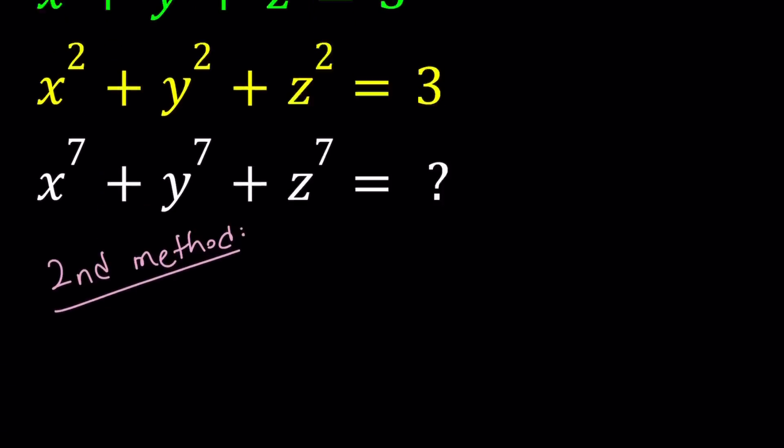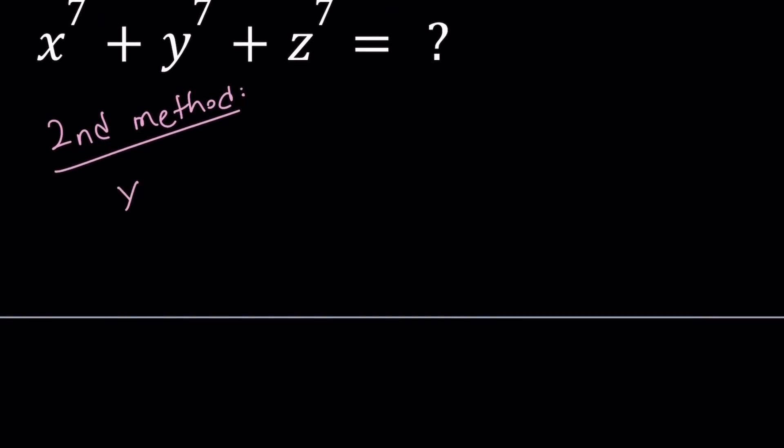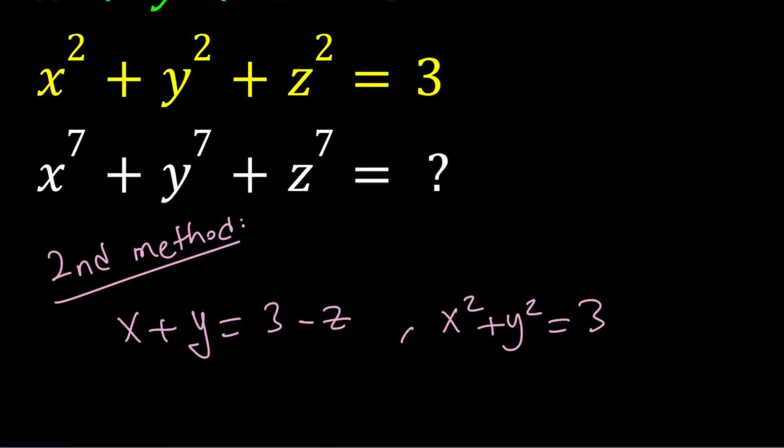I'm going to isolate x plus y from the first equation. So x plus y can be written as 3 minus z. And from the second equation, x squared plus y squared can be written as 3 minus z squared. I'm going to treat this as a system in two variables, x and y, so z will be treated as a constant. Everything will be in terms of z.